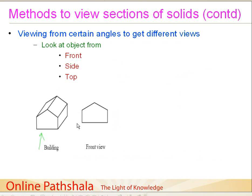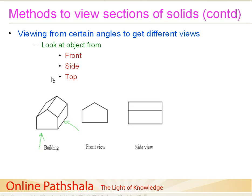Now what happens when I go to this side? When I stand on this side and look straight at it, it will look something like this — this is called the side view of this building. And now, let's say we have some magical powers and can go to the top and look straight down — or simply climb a tree and look down. This is your top view where you are seeing just this portion. So we have the front view, the side view, and the top view.